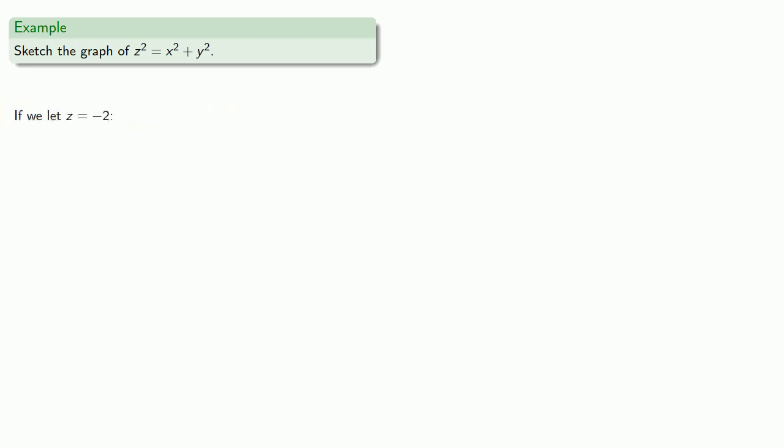So if we let z equals negative 2, then we get a circle centered at the origin with radius 2.